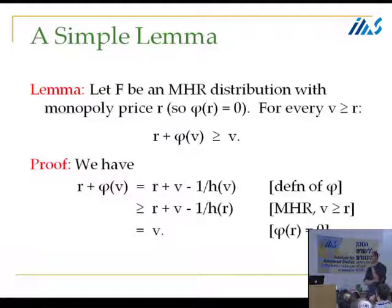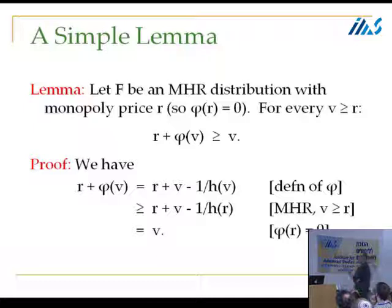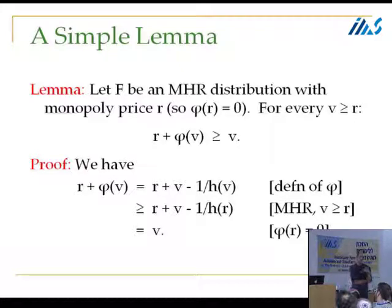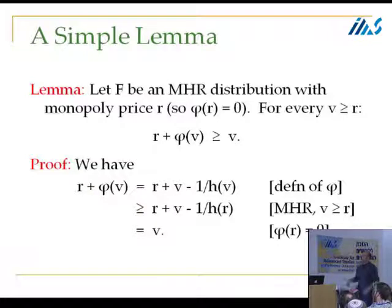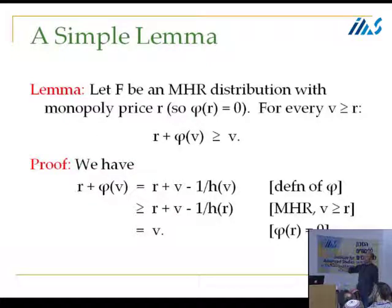First, what is the role of the MHR assumption? Second, where does the factor of two come from? Both will be evident from this lemma. We have an MHR distribution F with monopoly price r. Recall: the monopoly reserve of a distribution is exactly the valuation that has zero virtual valuation. The claim is: for any valuation v that clears the reserve price r, the sum of the reserve and the virtual value is at least the value v.